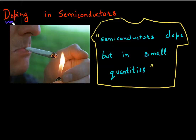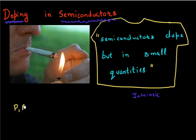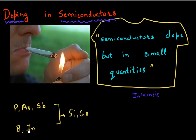In this next set of videos, I want to talk about doping in semiconductors. So far we have talked about semiconductors in which we did not introduce any dopants, and we call them intrinsic semiconductors. Now I want to talk about what happens if you introduce atoms like phosphorus, arsenic, antimony, boron, or indium into a lattice of silicon or germanium. These are the common dopants for group four semiconductors such as silicon or germanium. When you introduce these atoms, your semiconductor is no longer called intrinsic — you call it an extrinsic semiconductor.